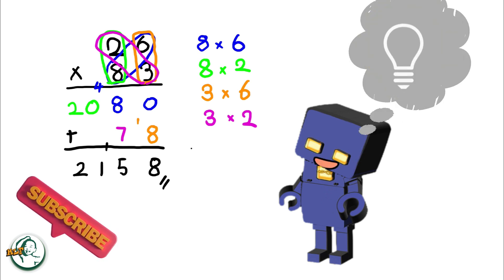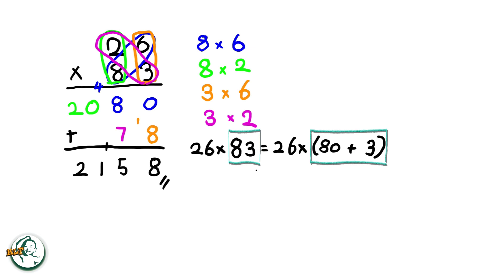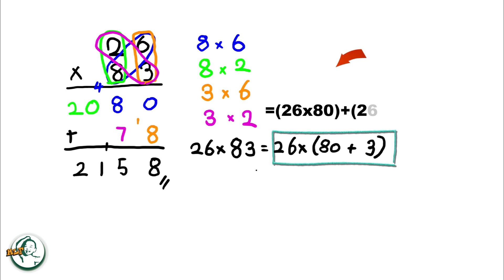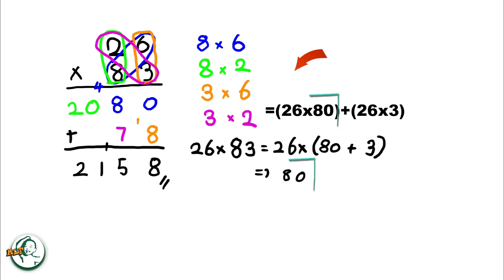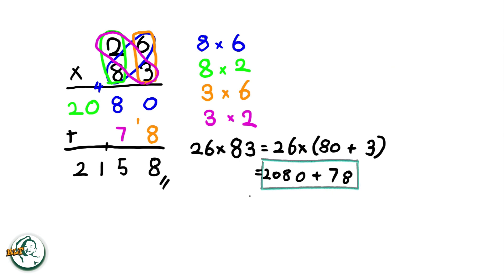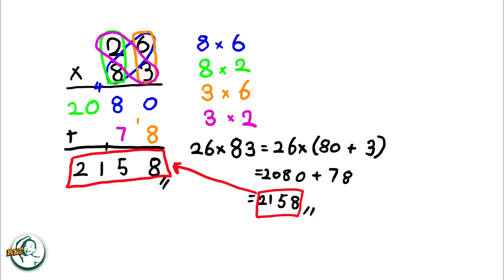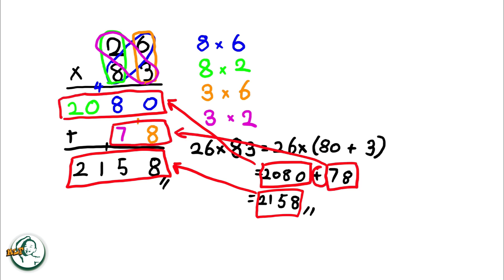Let's dive into the rationale behind this method. Consider 83 as 80 plus 3. We can express 26 times 83 as 26 times (80 plus 3). This expands into 26 times 80 plus 26 times 3. Calculating, we get 2080 for 26 times 80, and 78 for 26 times 3. Adding these results together, 2080 plus 78 equals 2158. This explains why we need to add these two numbers here in the column method.